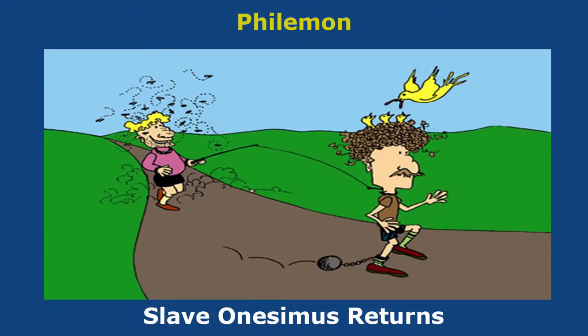Philemon. Fleeman is the man who has all the fleas — he is a flea man. Slave Onesimus Returns is the slave with the ball and chain. He has a onest-a-mess in his hair. His owner, Fleeman, is trying to reel him back, making him return using the fish line.